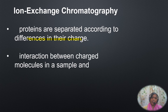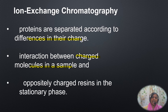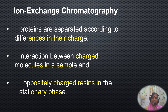Ion exchange chromatography is also an example of column chromatography. A matrix of gel is loaded onto the column as the stationary phase, and the mobile phase is a buffer. When the sample is loaded, there will be an interaction between the charged particles in the sample and the oppositely charged resins in the stationary phase. The stationary phase contains a gel or resin which also has a charge on it.